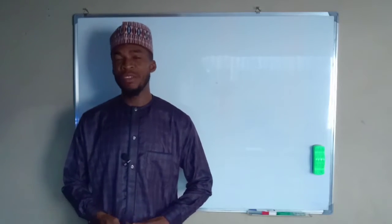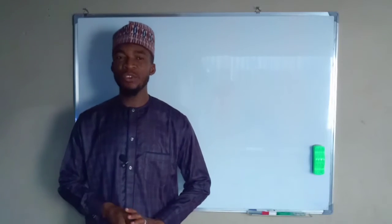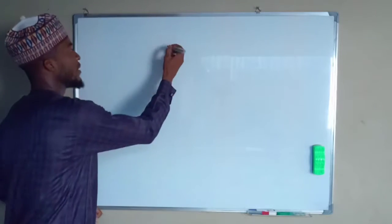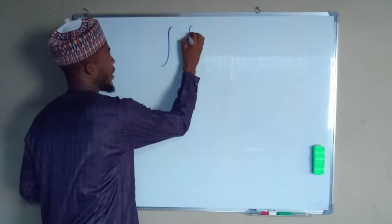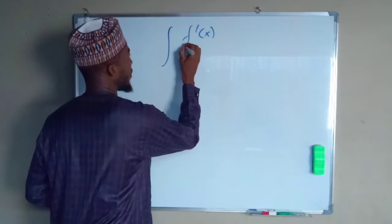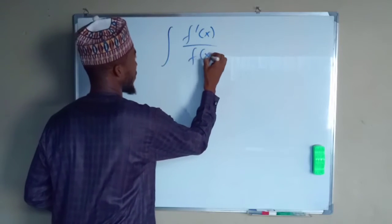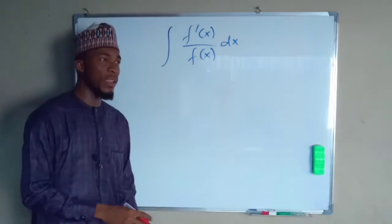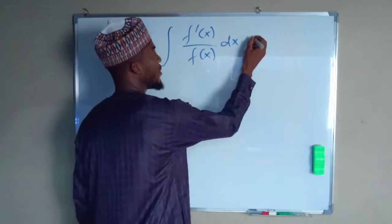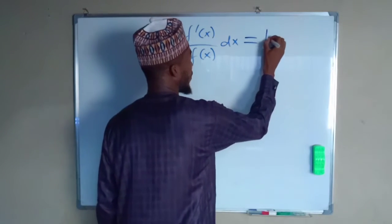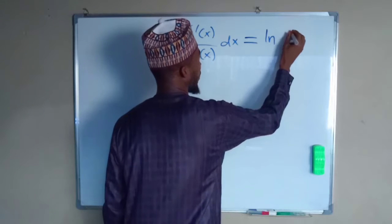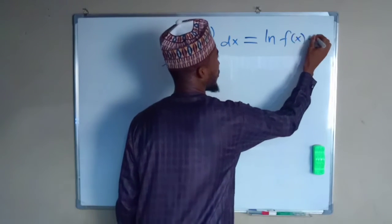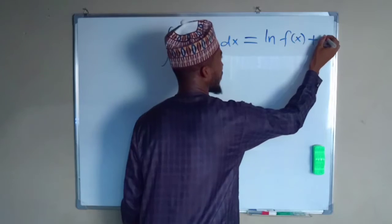Hello viewers. Today I'm going to show you how to find the integral of a function in the form of f prime of x divided by f of x with respect to x. This is just equal to the natural log of f of x plus the constant of integration C.